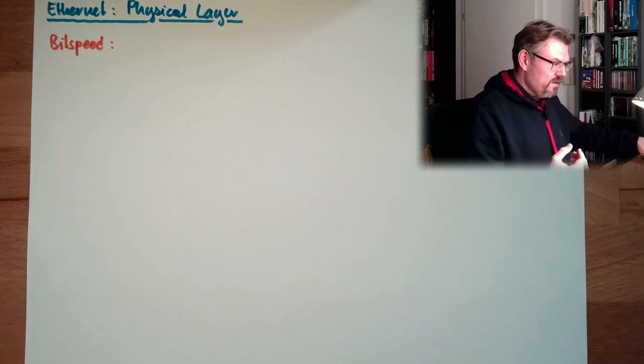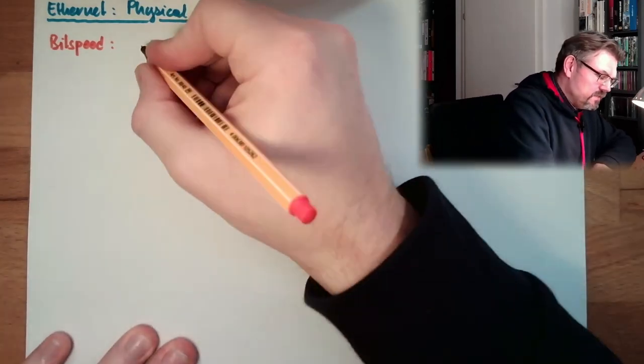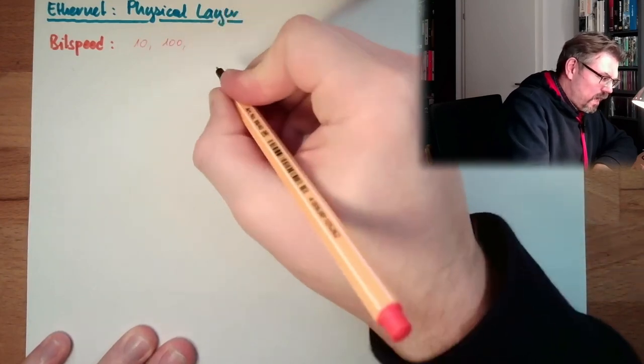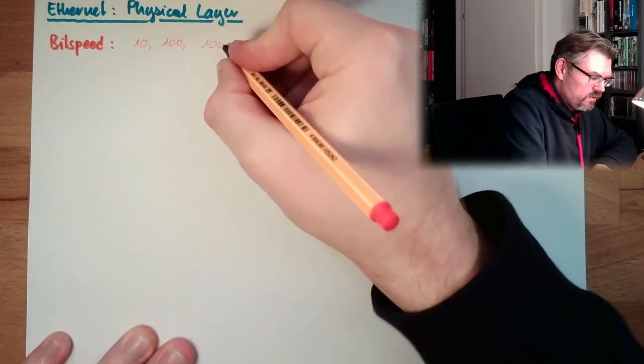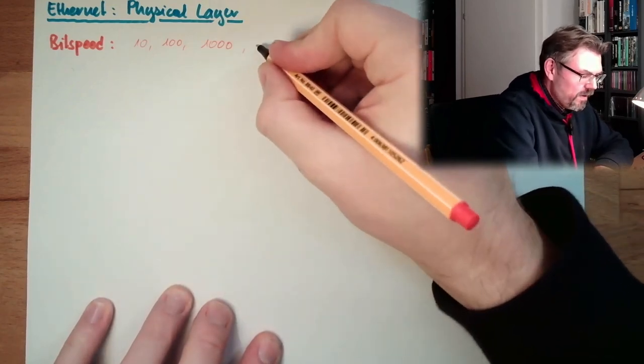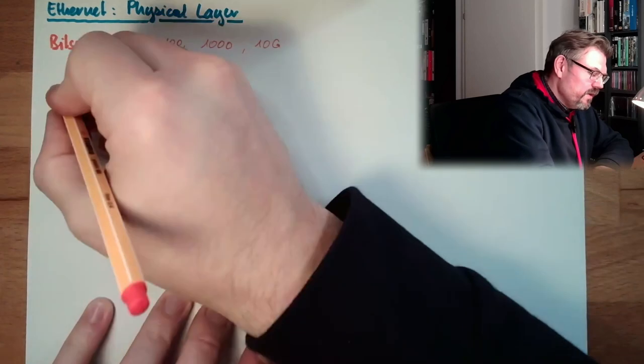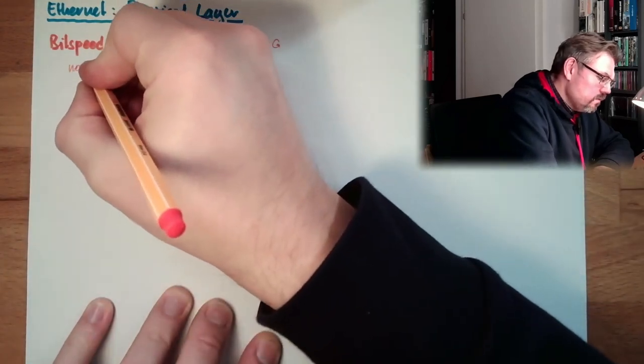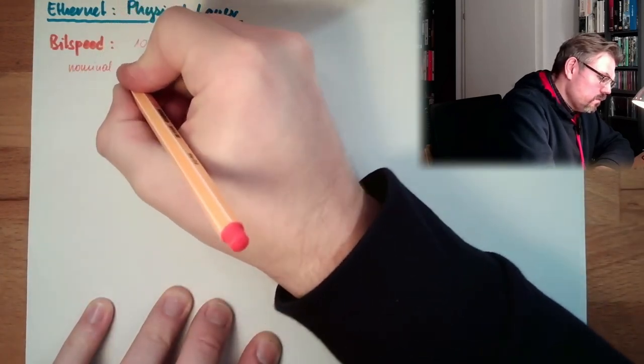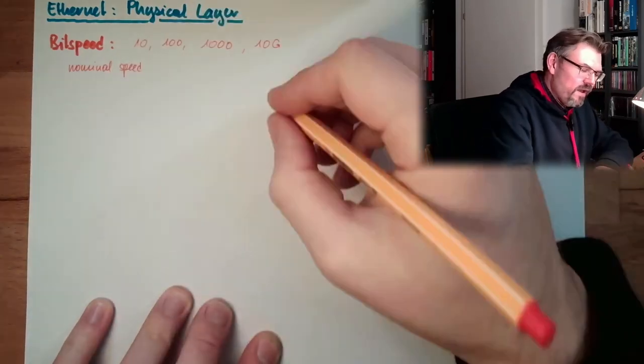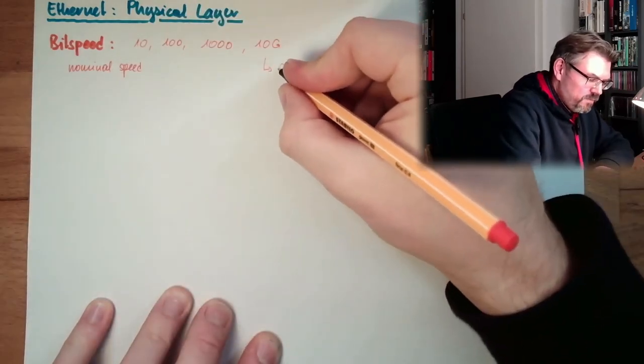10, 100 is the first thing, the first thing written there. And this might be, for instance, 10, 100. Nowadays usually 1000. There might be 10G. So this is the nominal speed of the bits on the wire. And G, this means gigabit per second.